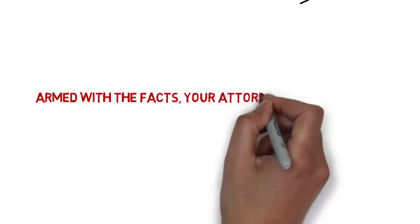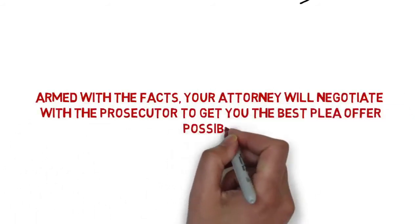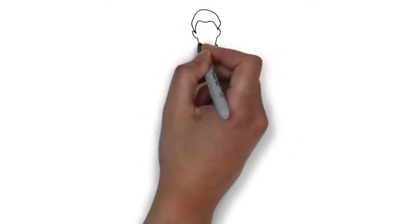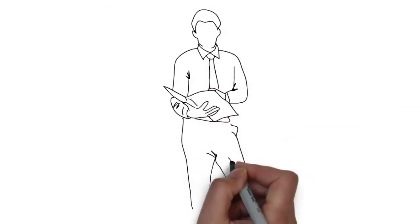Armed with the facts, your attorney will negotiate with the prosecutor to get you the best plea offer possible. The prosecutor is far more likely to offer a favorable plea after your attorney points out weaknesses in the case against you.